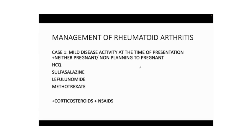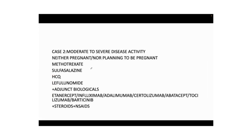Management — keep it simple, as they have only five minutes to question you. For mild disease activity, if the patient is not pregnant and not planning pregnancy, drugs include hydroxychloroquine, sulfasalazine, leflunomide, and methotrexate — you must know adverse reactions of all these drugs — plus corticosteroids and NSAIDs. For moderate to severe disease, the same DMARDs apply, but here you can introduce biologicals: etanercept, infliximab, adalimumab, certolizumab, abatacept, tocilizumab, and baricitinib, along with steroids and NSAIDs.